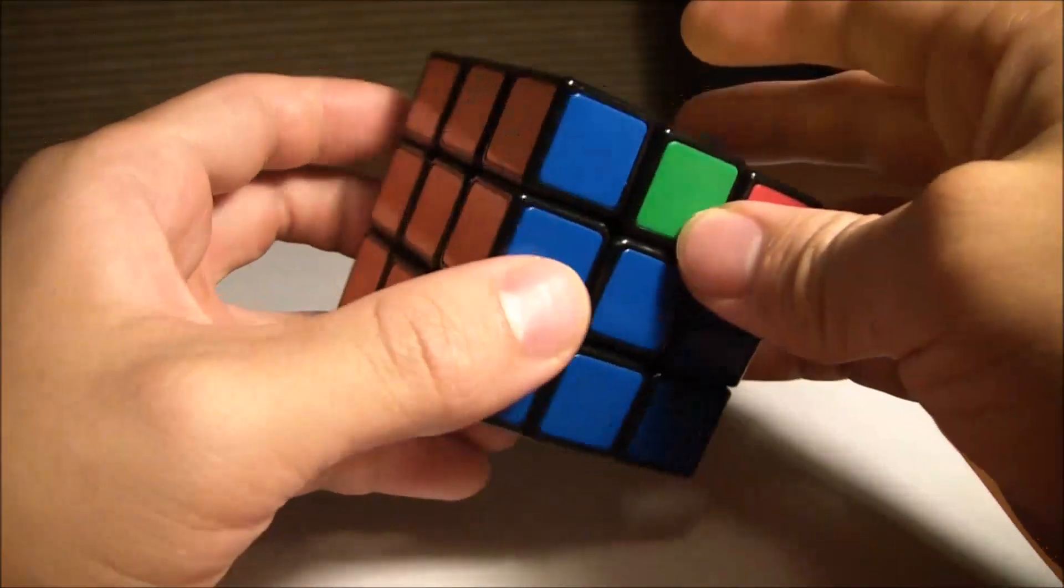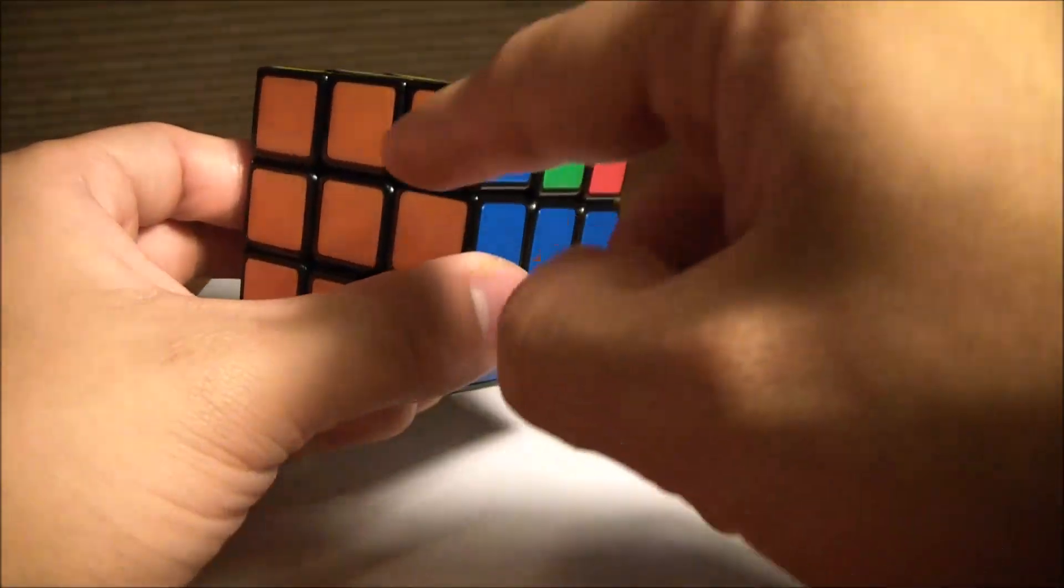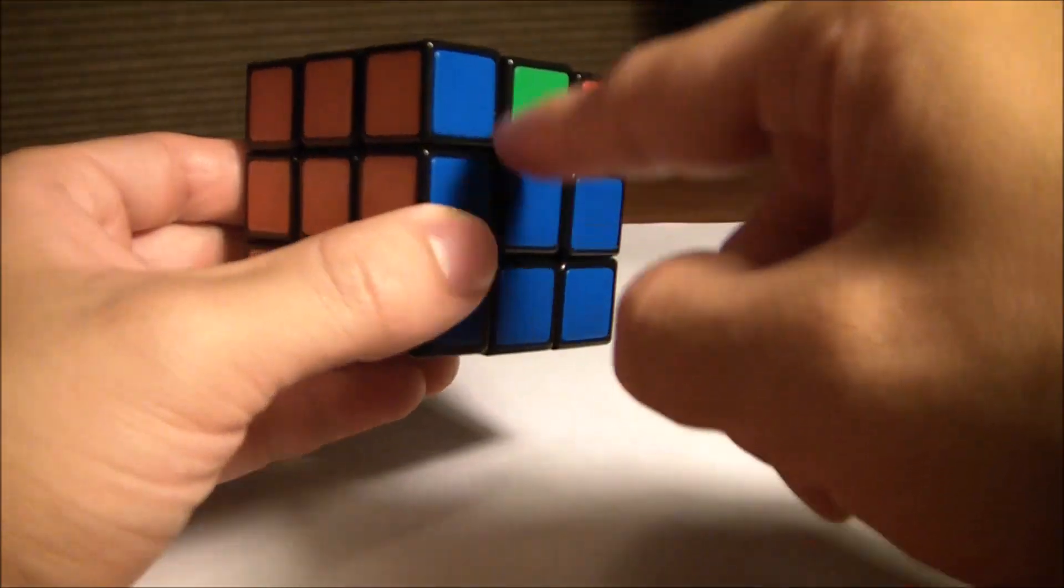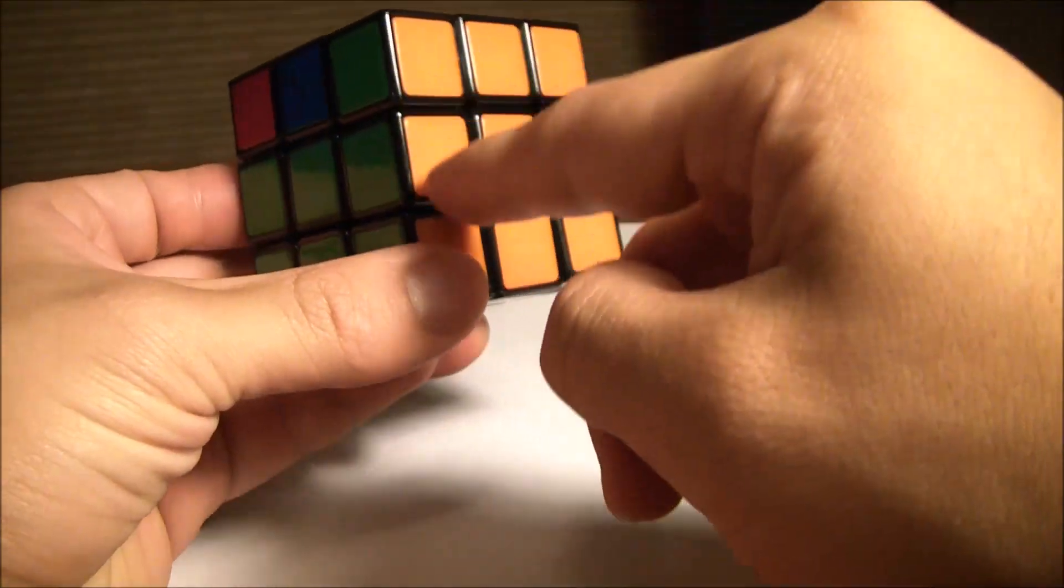In this case, this corner piece is in the right spot because the orange and the blue are with their sides. Same with this one.